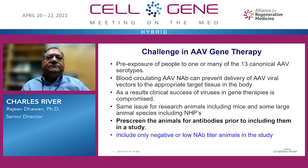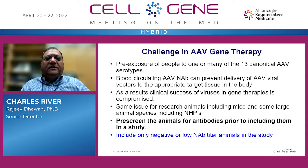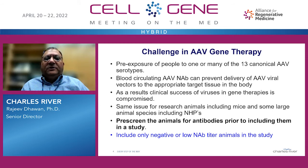This is to overcome a key challenge in AAV gene therapy. People who are pre-exposed to one or many of the 13 canonical AAV serotypes form antibodies against these specific viruses. These antibodies, including neutralizing antibodies, circulate in the blood and can prevent delivery of AAV viral vectors to the appropriate target tissues, compromising the clinical success of gene therapy studies. The same issue applies to research animals, especially large animal species including non-human primates. Therefore, it is important to pre-screen animals for antibodies prior to including them in a study and to use negative — or if not possible, low — neutralizing antibody animals.